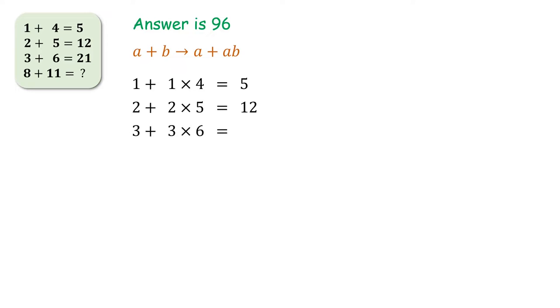Similarly, 3 plus 6 is nothing but 3 plus 3 into 6. By adding this we get 21. In the same manner 8 plus 11 actually mean 8 plus 8 into 11 which is nothing but 8 plus 88 or rather 96, and this is how they have got the answer.